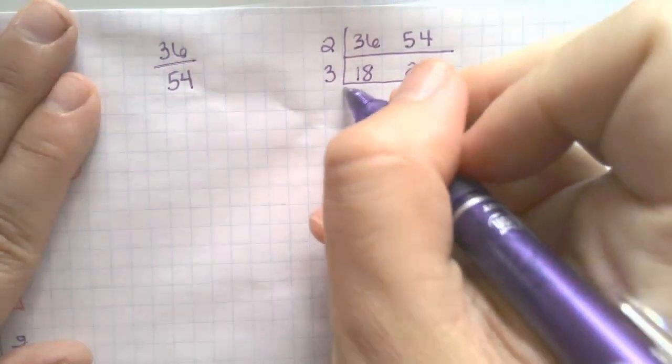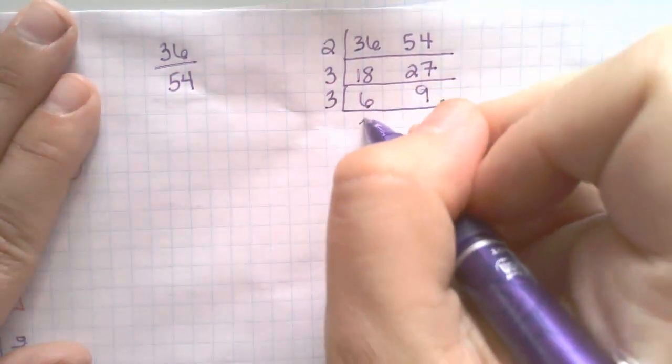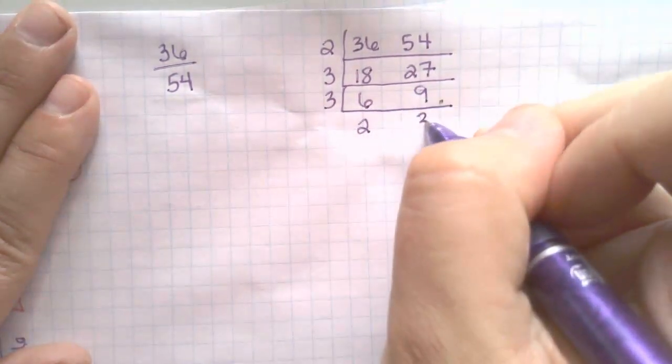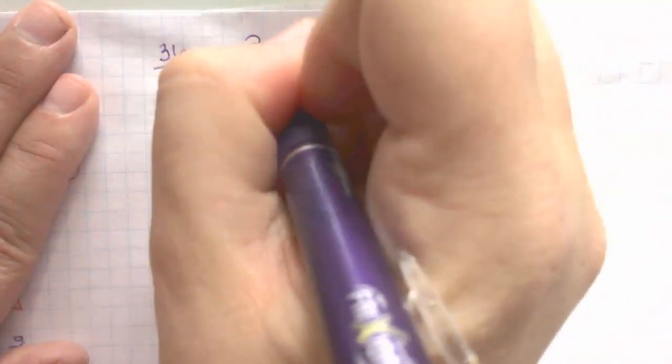And we're once again here. We can go down again and we can take out another 3. 6 divided by 3 is 2. 9 divided by 3 is 3. And once we did this again, we end up at 2 thirds again.